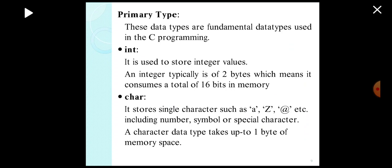Let's see the primary type. These data types are fundamental data types used in C programming. First one, integer. It is used to store only integer values. An integer typically is of 2 bytes, which means it consumes a total of 16 bits in memory.